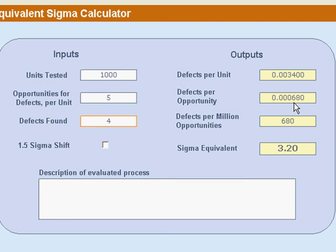We've got six ten-thousandths, roughly, of a defect per opportunity, which is kind of awkward. Easier to express that as 680 defects per million opportunities, or DPMO. And then, depending on whether or not you like the 1.5 sigma shift, we've either got a 3.2 sigma process or a 4.66 sigma process.